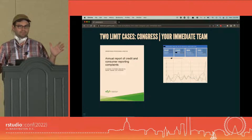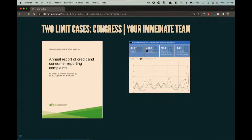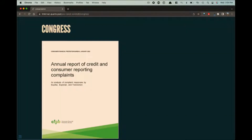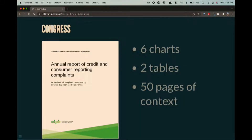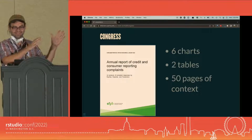I have a couple of limit cases from my own work. Earlier this year I wrote a report to Congress — required by law — about credit reporting consumer complaints. It's got six charts, two tables, started in R Markdown, and it's got 50 pages of context. Congress is one limit case. They need detailed explanations of all the fields and key terms, they need to know about the data collection process, the law that governs it, and all that context. I actually have a JD, so that part helped me.